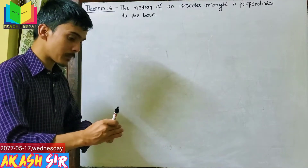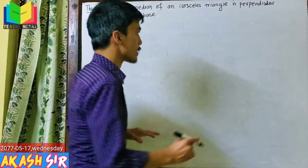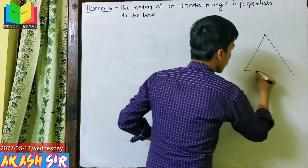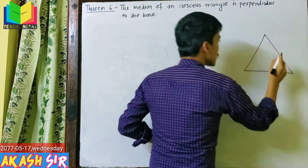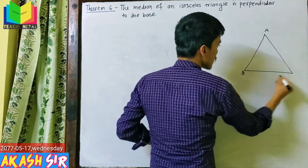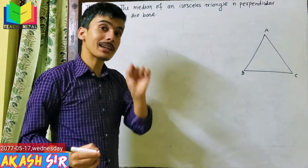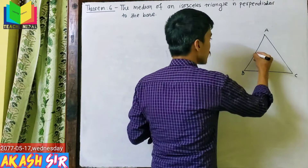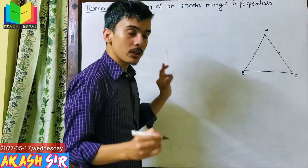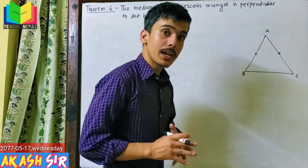We need to have an isosceles triangle. Let's say this triangle is triangle ABC — an isosceles triangle. An isosceles triangle has at least two sides equal. AB is equal to AC. So this is an isosceles triangle.